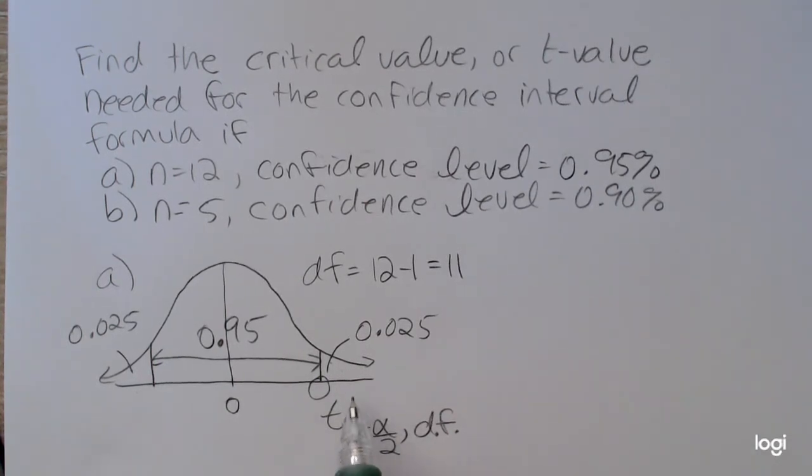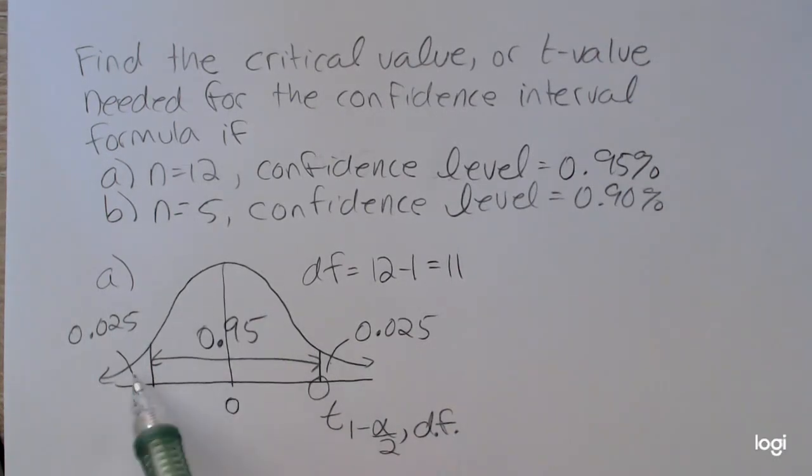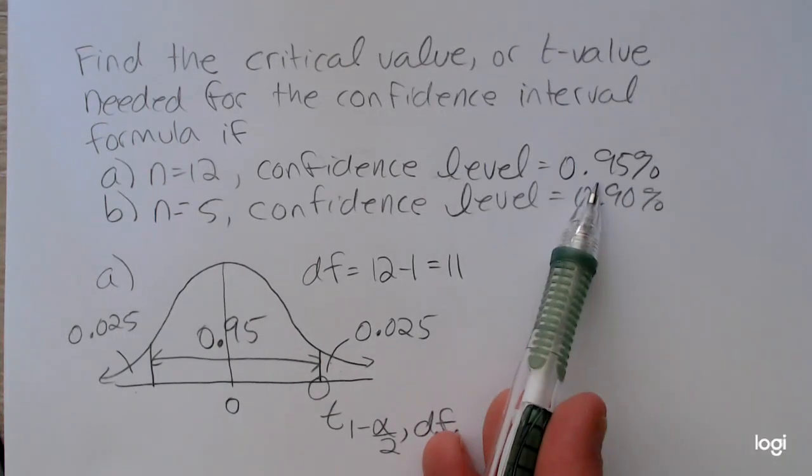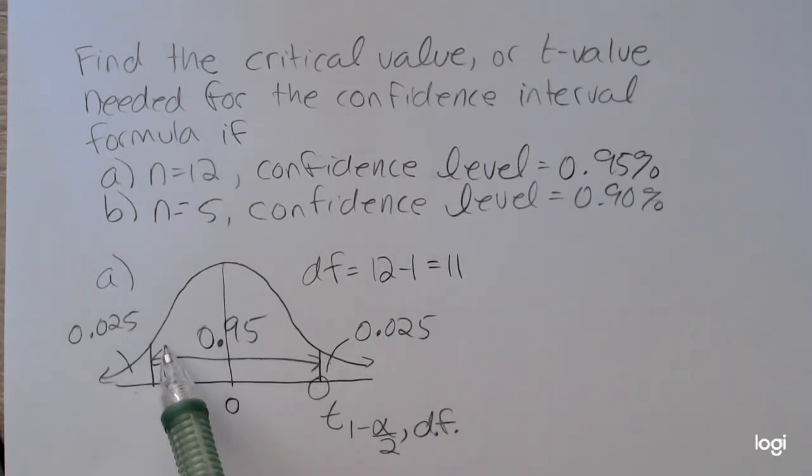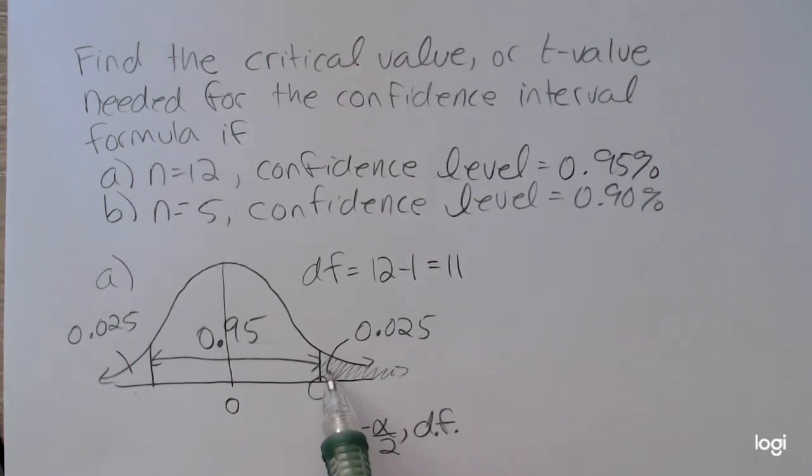So it might be easier if you don't want to get bogged down in notation. It might be easier just to sketch the bell-shaped distribution, recognize the fact that the level of confidence represents the center area, and then you're going to have the symmetric amount of area in each of these tails. So right here, this shaded area, further to the right, is the area we need when we look at our table.